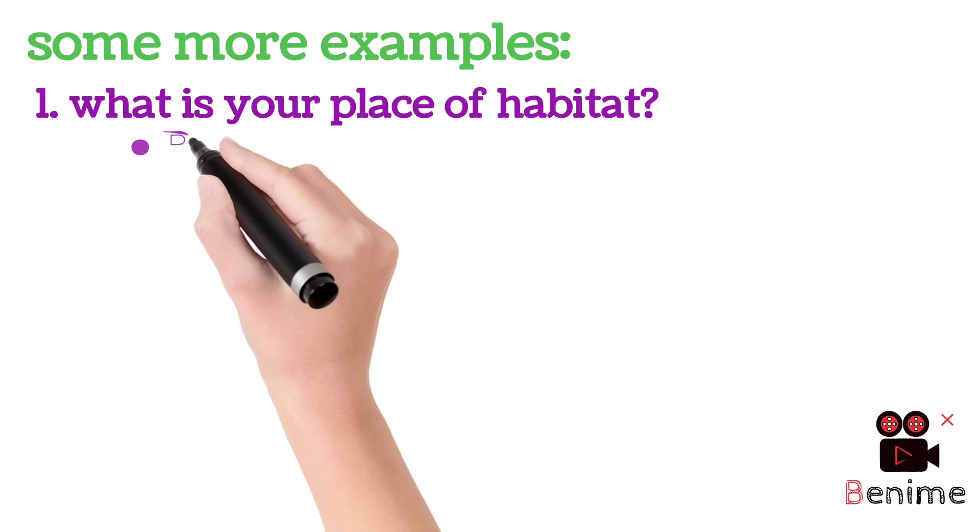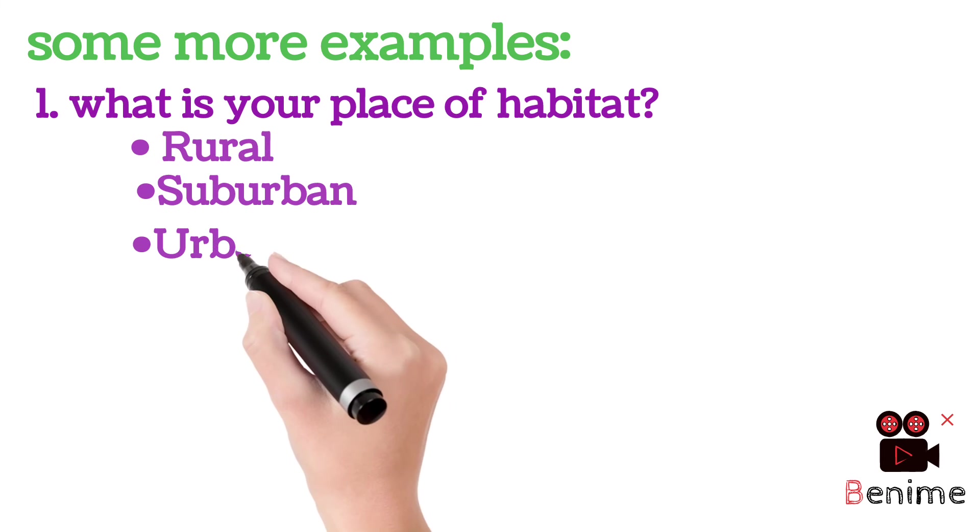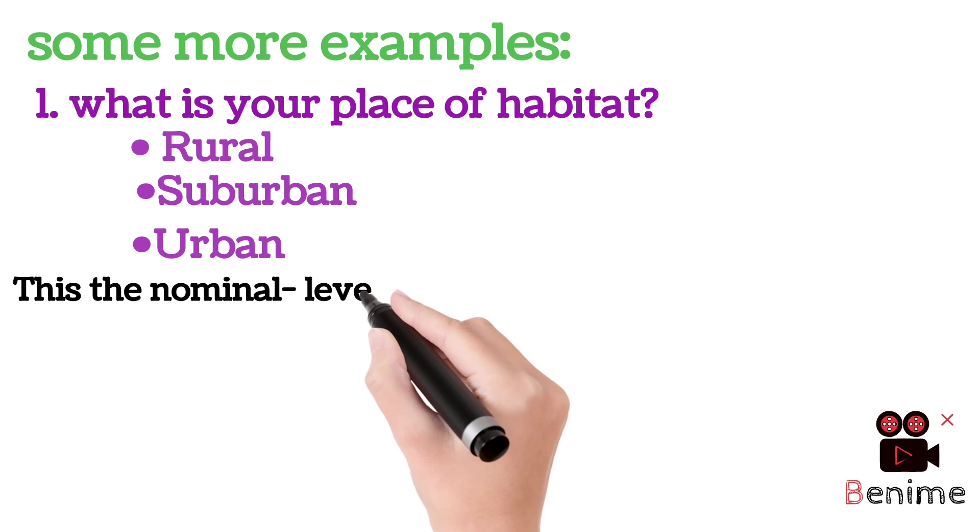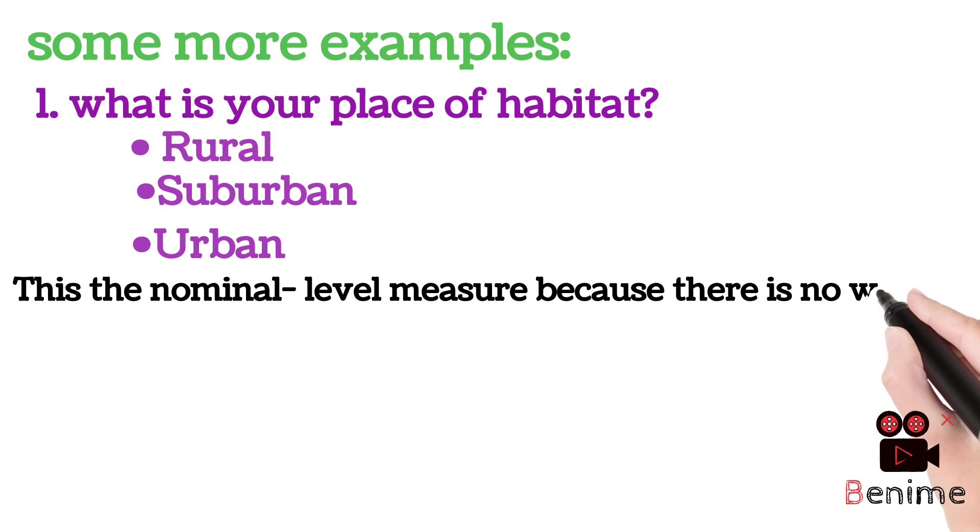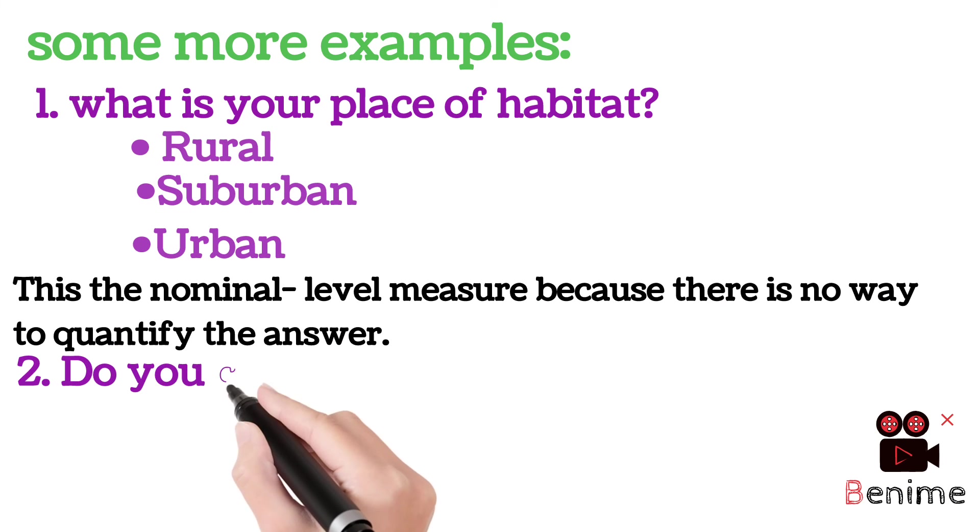Some more examples. First one, what is your place of habitat? Rural, suburban and urban. Here we categorized as three classes. This is a nominal level measurement because there is no way to quantify the answer.